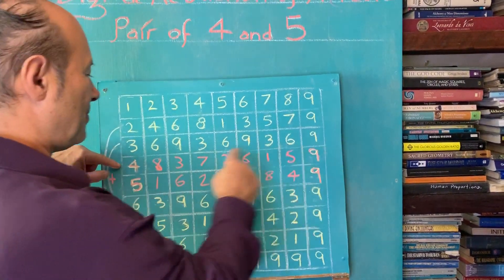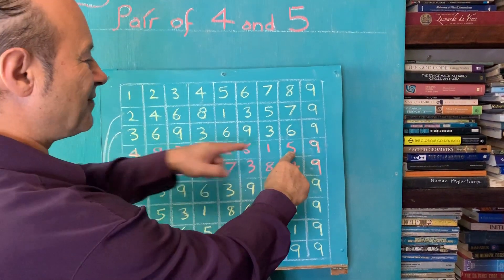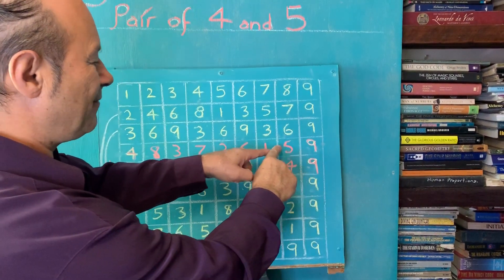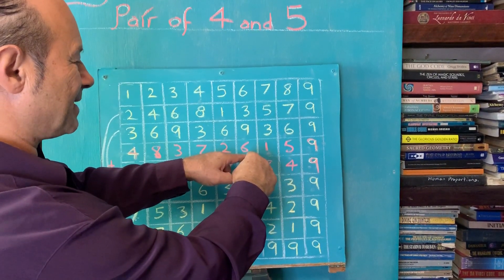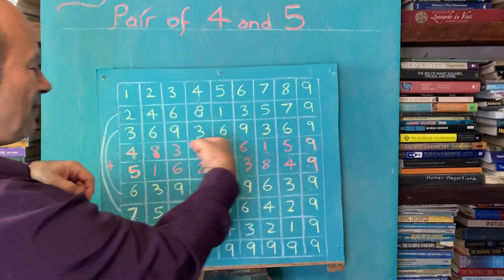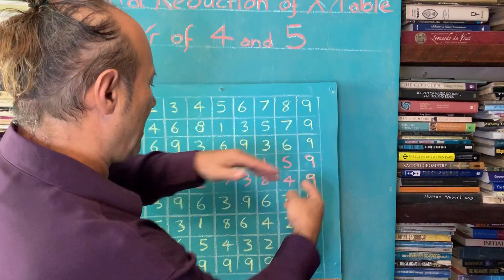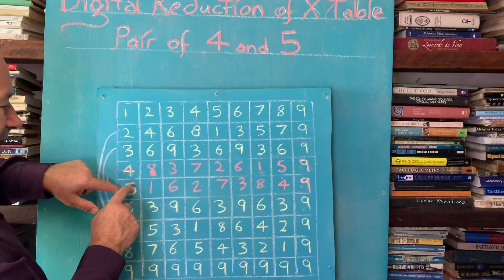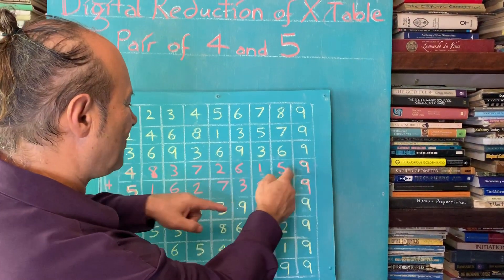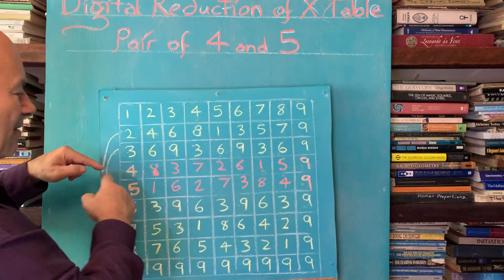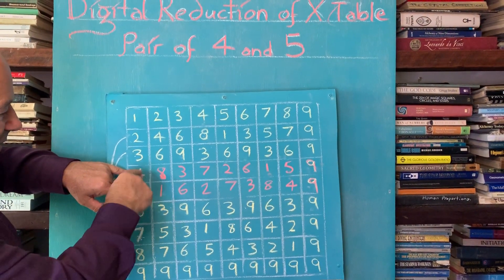What we noticed about the four times table is that the five times table is its reverse. The five times table goes: five, ten becomes one, fifteen becomes six — so the five times table digit sequence is the reverse of the four times table going the other way. The five times table here, five, one, six, two, is the reverse of the four's sequence.